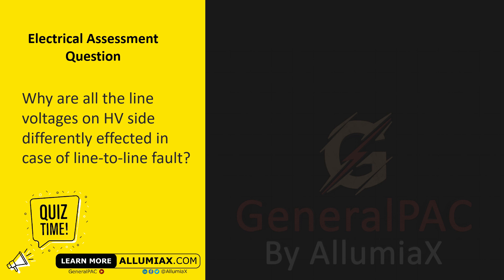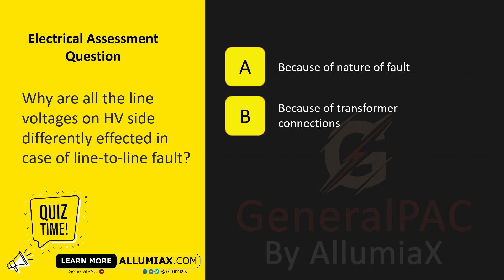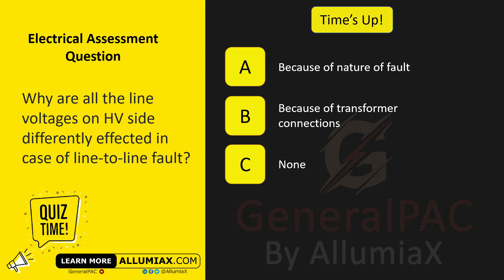Why are all the line voltages on the high-voltage side differently affected in case of line-to-line fault? A. Because of natural fault. B. Because of transformer connections. C. None. The answer is B — because of transformer connections.